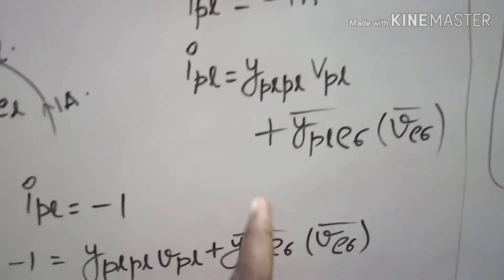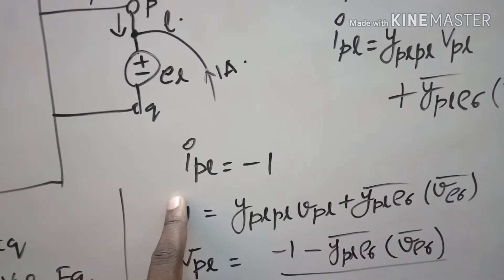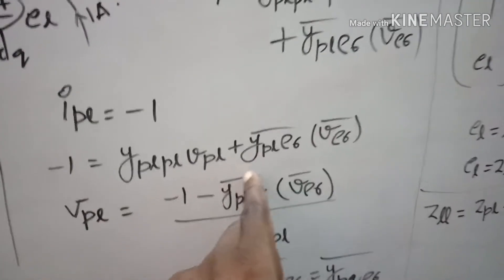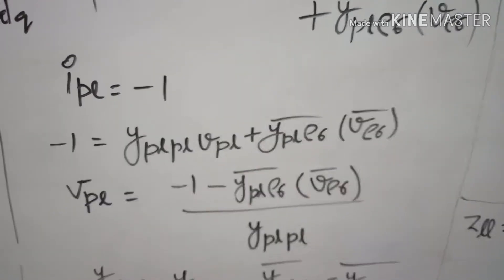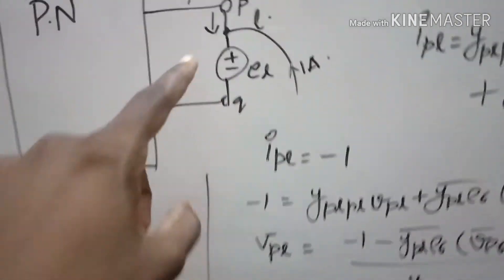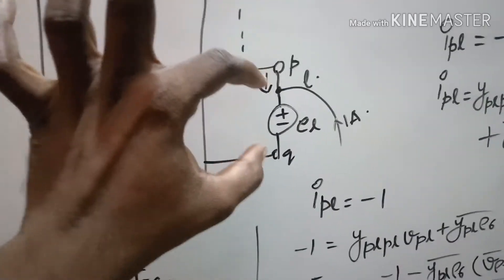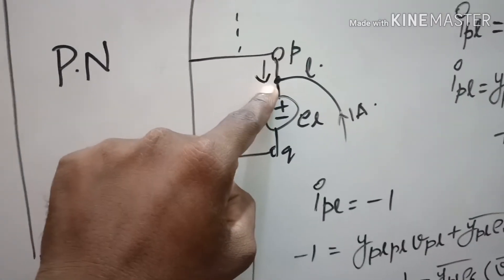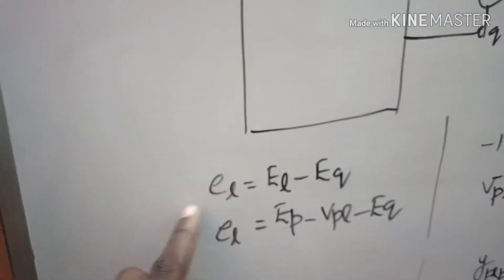We got the performance equation as seen in previous videos. Substituting i_pl as minus one: minus one equals y_pl_pl times v_pl plus y_pl_rho_sigma_bar into v_rho_sigma_bar. From this we can get v_pl as the corresponding value. From the last class we observed that el is just the difference between these two voltages. el minus eq equals small el, hence small el equals el minus eq.